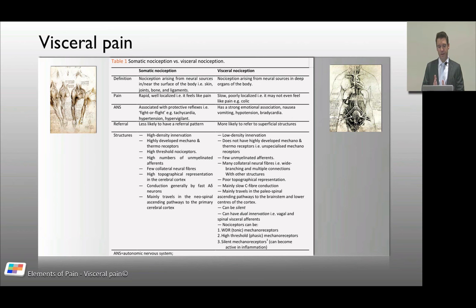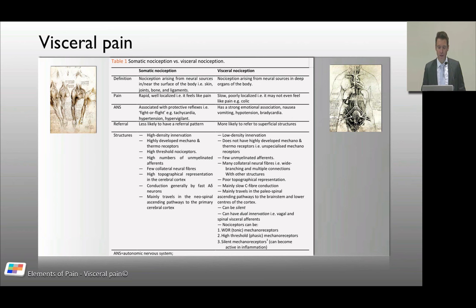Going through this comparison gives us a clearer idea of what visceral nociception is. The referral pattern for somatic nociception is generally well-localized with not much referral, whereas visceral nociception is more likely to be associated with referral patterns. The innervation also differs: somatic has high-density innervation, while visceral has lower-density innervation.